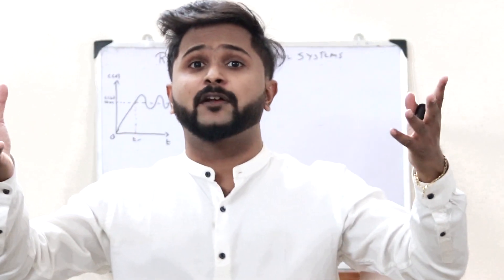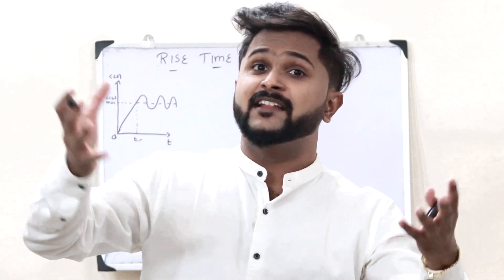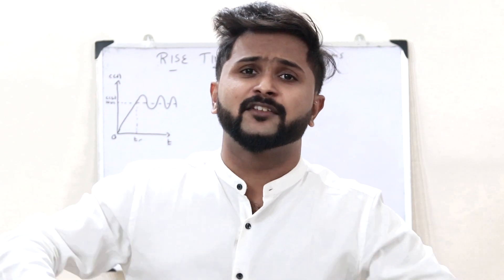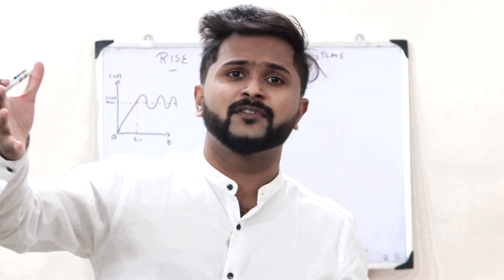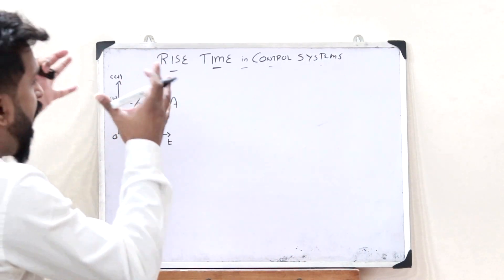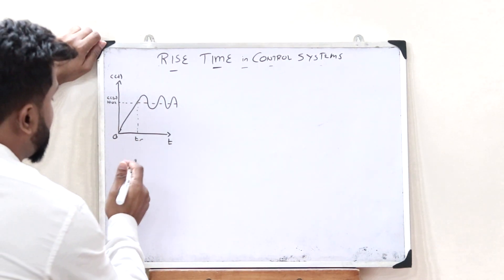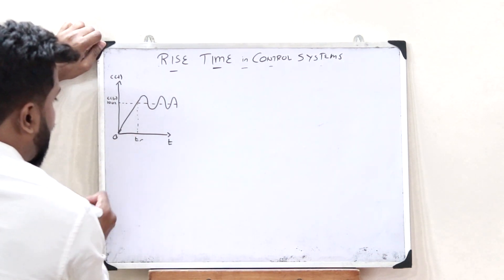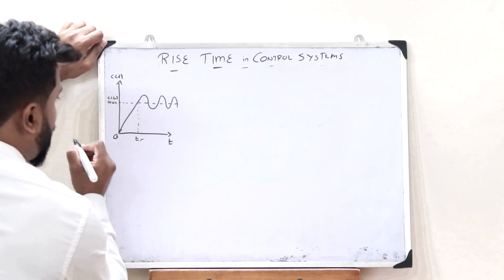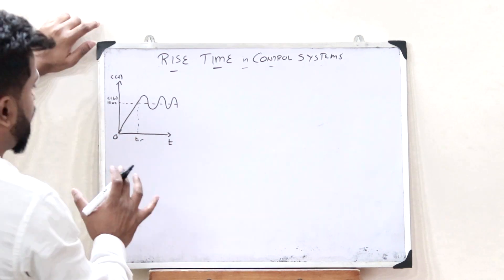In the case of an overdamped control system, it is from 10% to 90%. In the case of a critically damped control system, it is from 5% to 95%. Here we are considering an underdamped control system where the rise time is the amount of time taken by a control system to reach from 0% to 100% of its value.